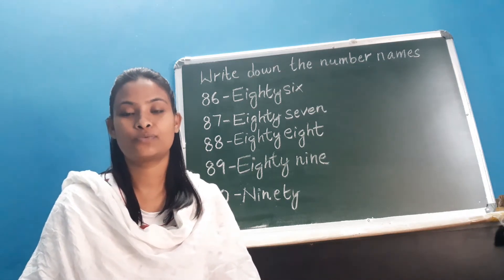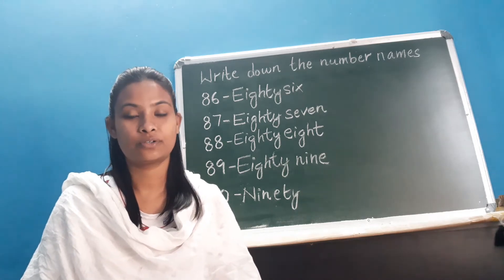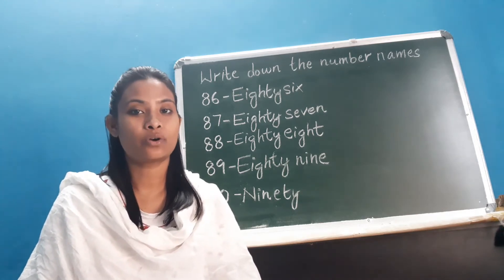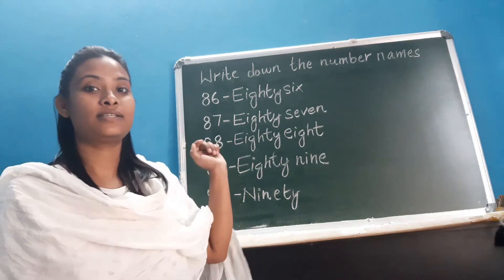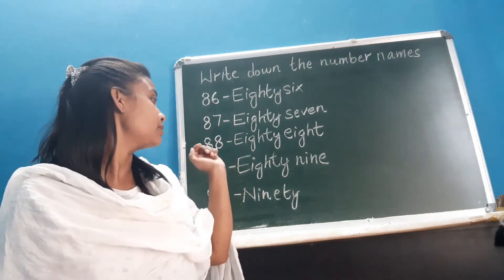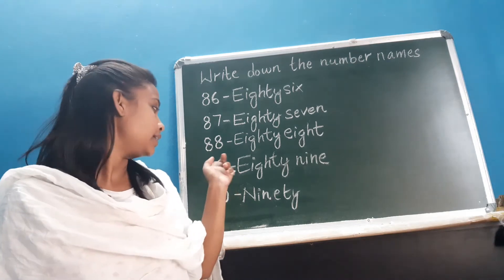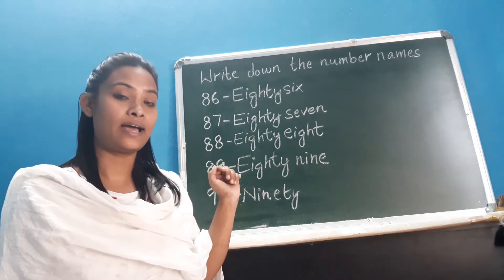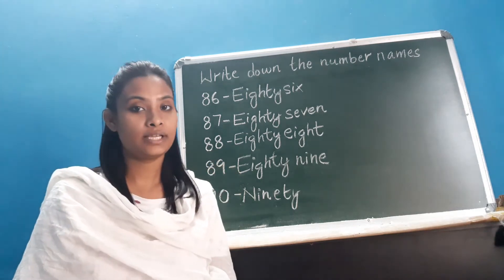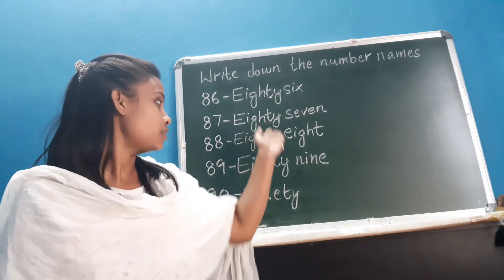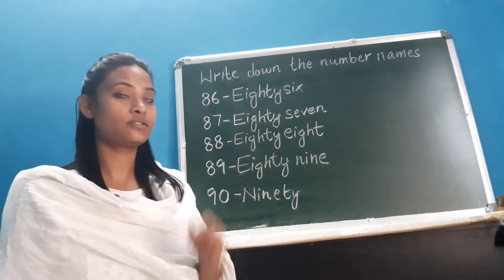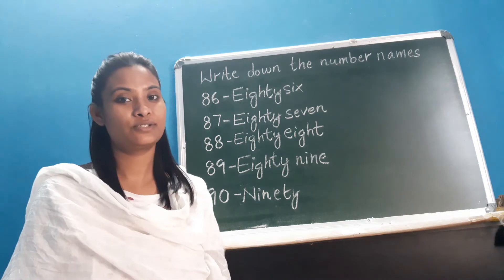So today in our maths class we will learn number names. Alright, number names of 86, 87, 88, 89 and 90. Okay, so these are the spellings of these numbers, right? So let's begin.